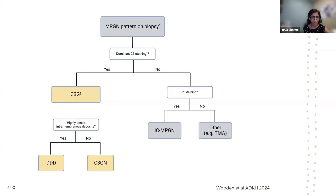On an MPGN pattern biopsy, if there's a dominant C3 staining — not isolated C3 staining, but dominant C3 staining — it is considered to be C3 glomerulopathy. Within C3 glomerulopathy, if you have highly dense intramembrane deposits, it's dense deposit disease; if not, then C3GN.